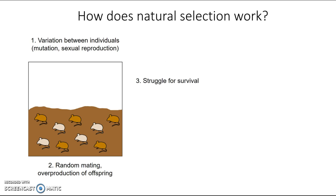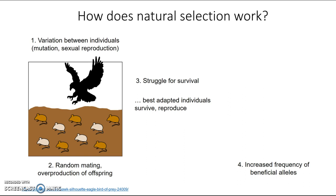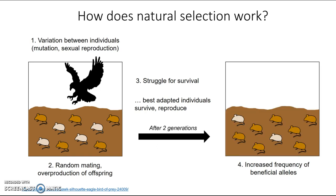Now there has to be some sort of struggle for survival — competition for resources, disease, predators, prey. In this case, the environmental pressure we're looking at is a predator: a bird that eats mice. It's more likely to catch mice that don't blend into their environment, so it catches the light ones more frequently. The best adapted individuals — the darker brown ones — survive and reproduce. After two generations, we see an increased frequency of the allele coding for that darker coat color.